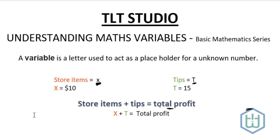X will represent store items and T will represent tips. Now what we're going to find is total profit. So this is the equation: X + T = total profit. Now you're just putting in the values for X and T, which is 10 + 15 = 25. So you understand what these values represent.